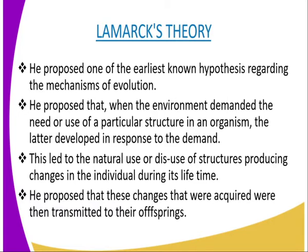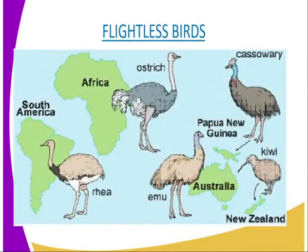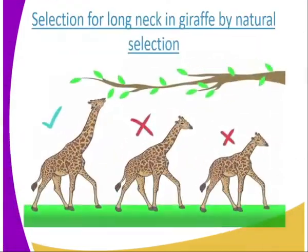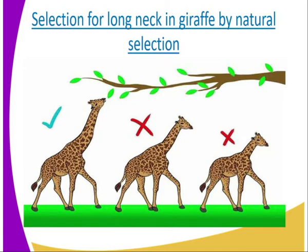These new forms acquired certain advantages over the ancestral forms in the exploitation of a particular ecological niche. He cited the example of the development of the long neck of the giraffe, which developed as a result of ancestral forms stretching towards higher levels of vegetation in competition with other browsers for food. The long neck trait formed was passed on to successive generations, giving them advantage over the shorter-necked forms.